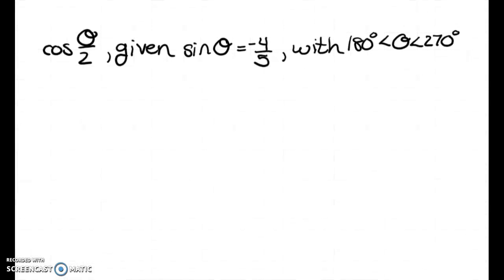Now let's find the cosine of theta over 2, given that the sine of theta is negative 4 fifths. I know that theta, according to the given inequality, is going to be in Q3.